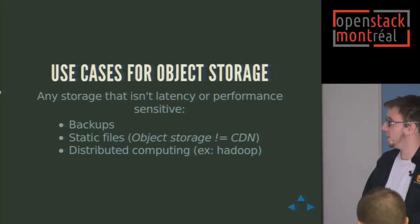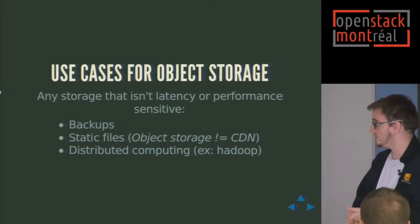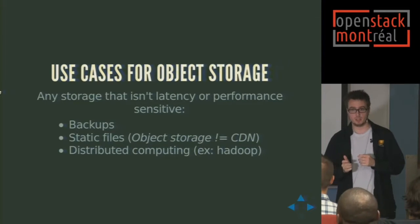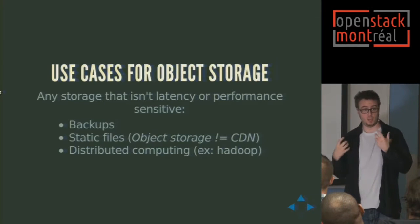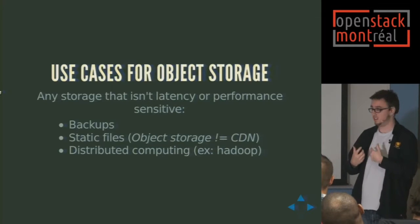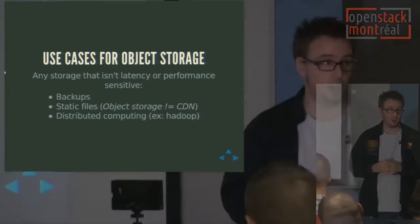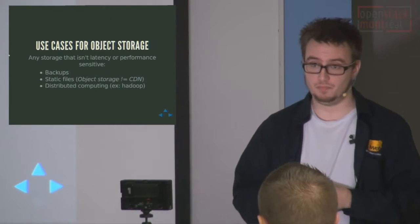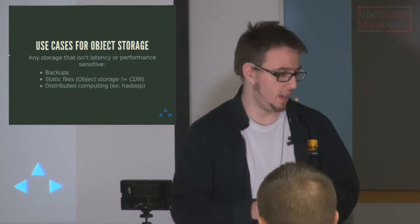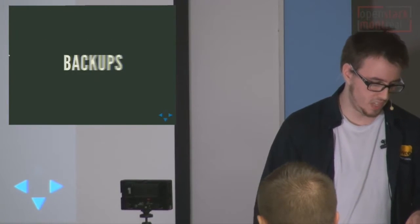As price for storage and bandwidth goes down, object storage is now very competitive when you want to store a large amount of data. Key use cases: any storage that isn't latency or performance sensitive — it's really good for archival backups and static files. Object storage is not a CDN; you'll have content delivery networks fetching files from object storage, but you usually don't want to serve static content directly from it. There's also distributed computing — the Sahara project in OpenStack works with Hadoop, and it's becoming a trend with big data.